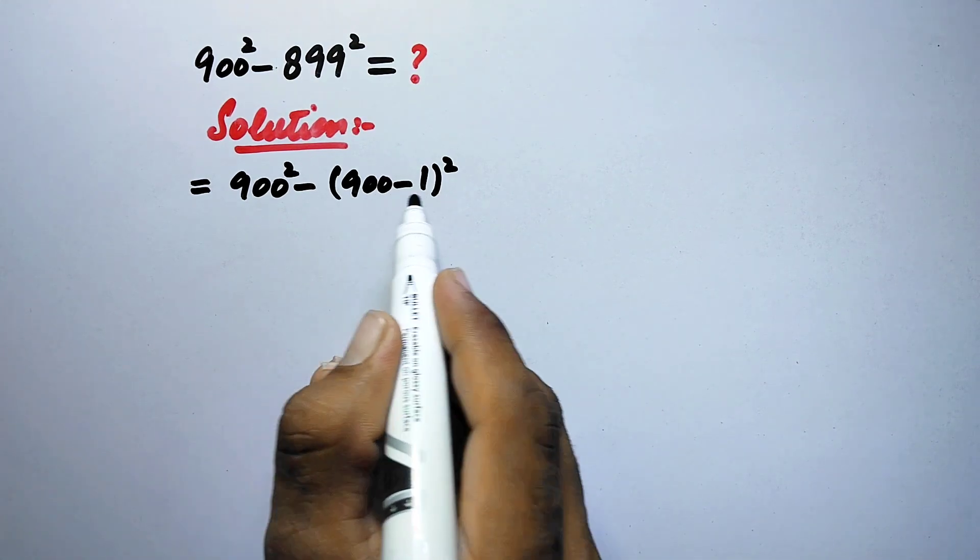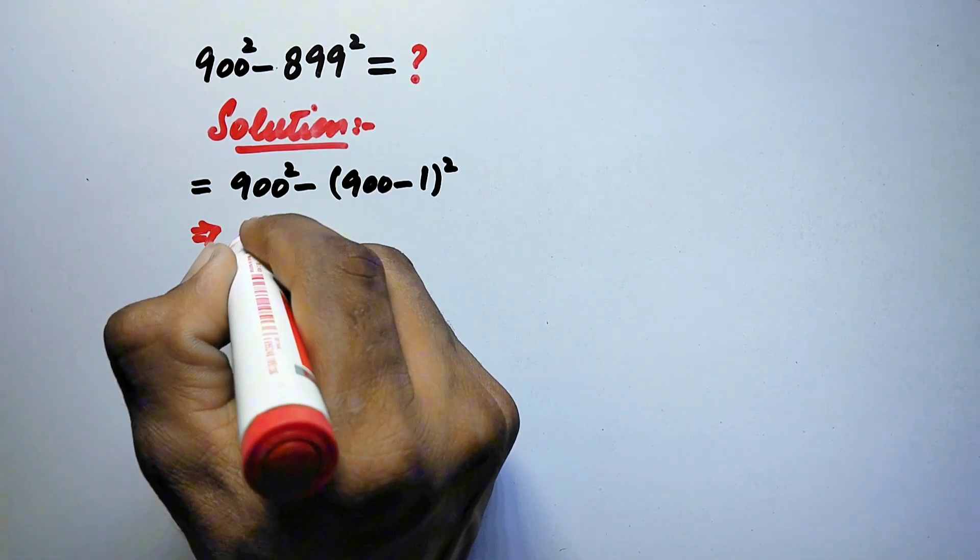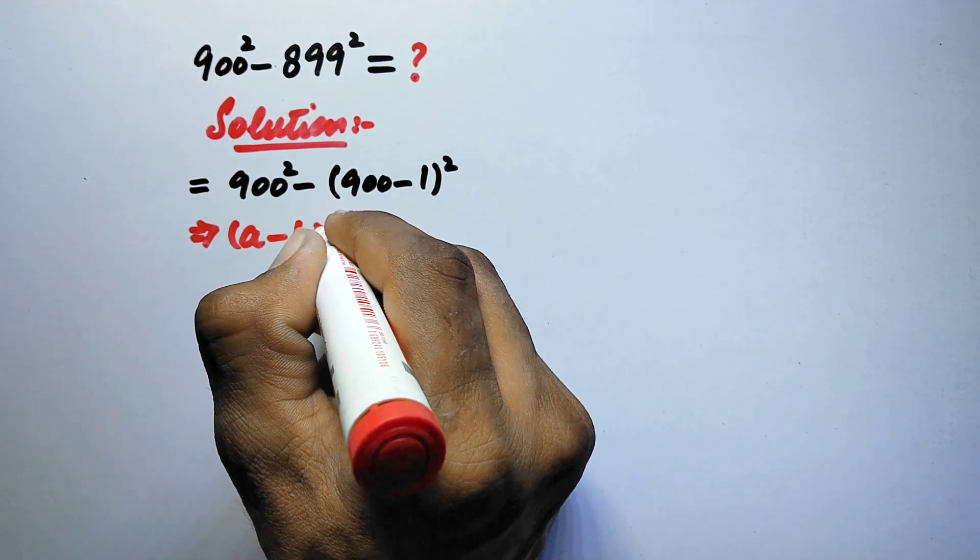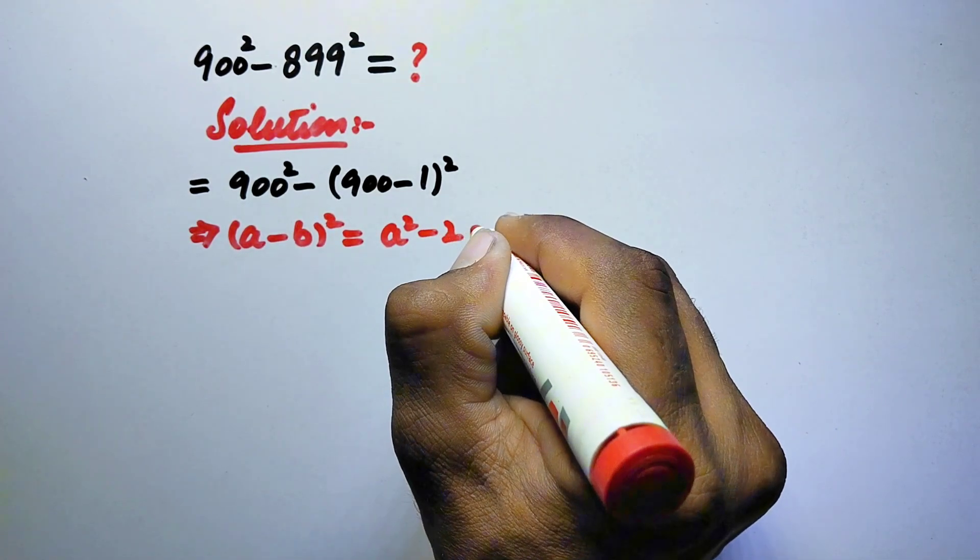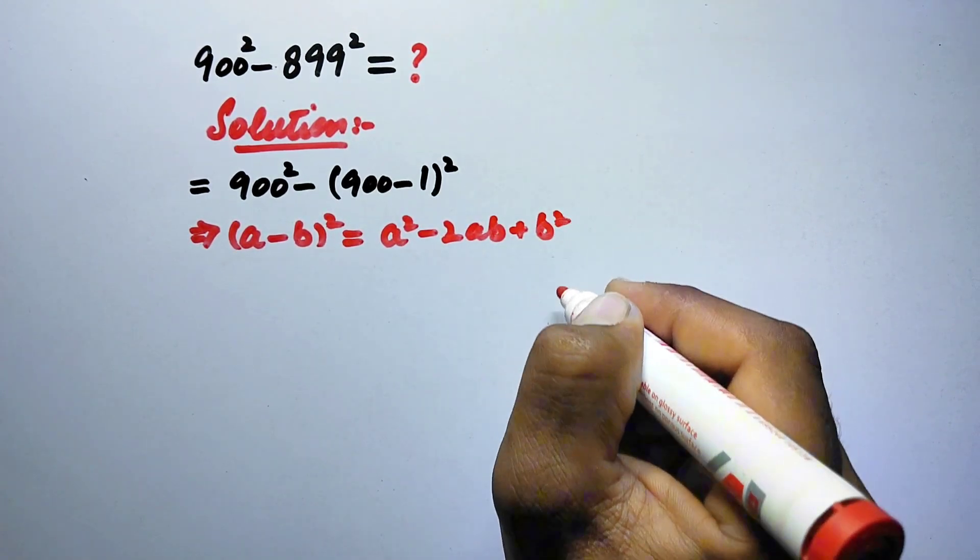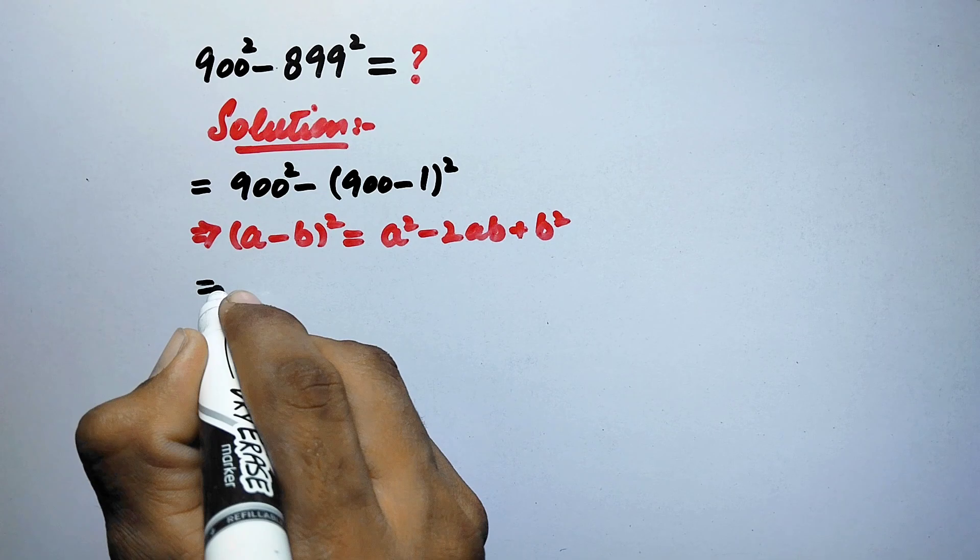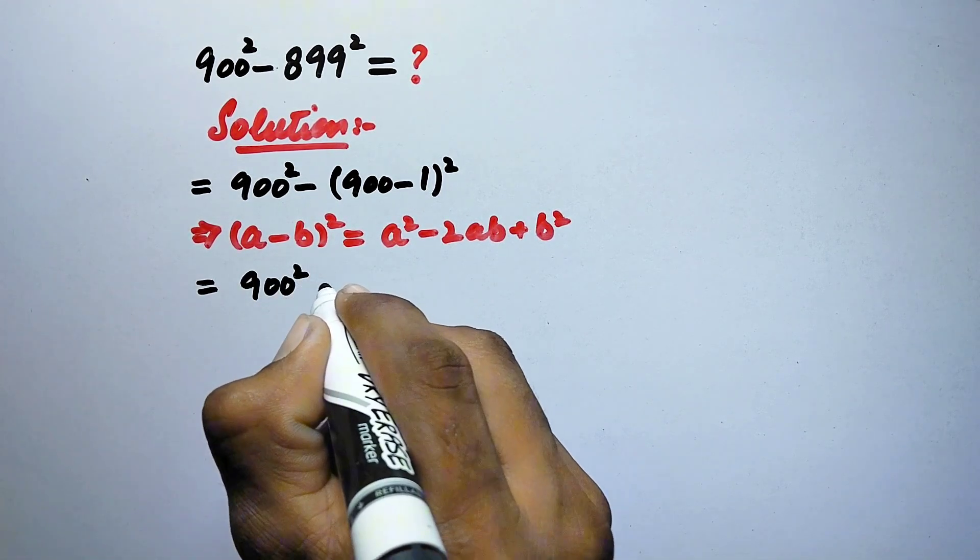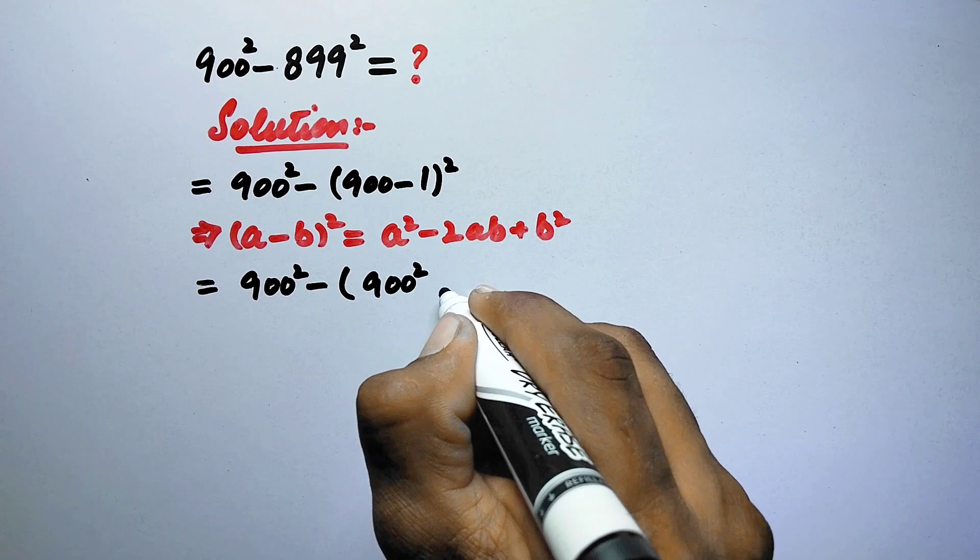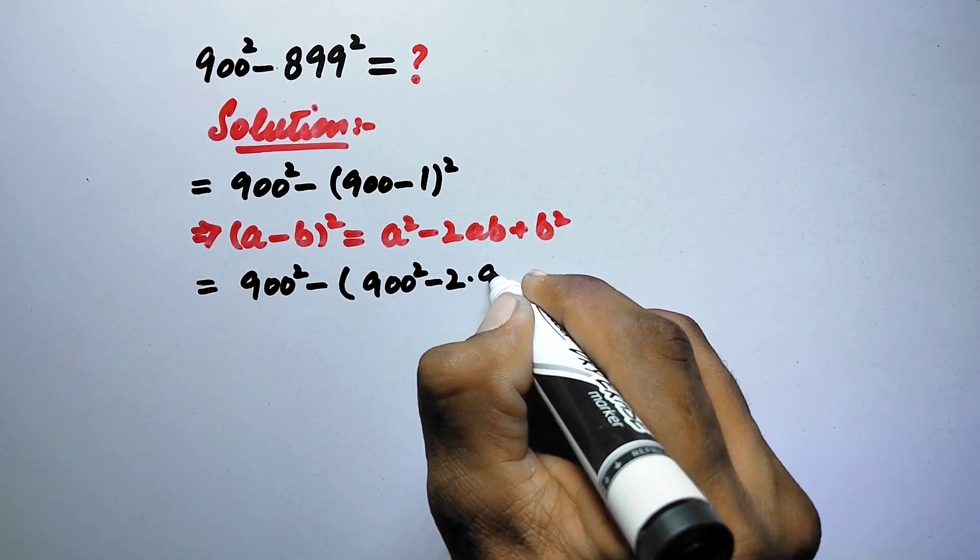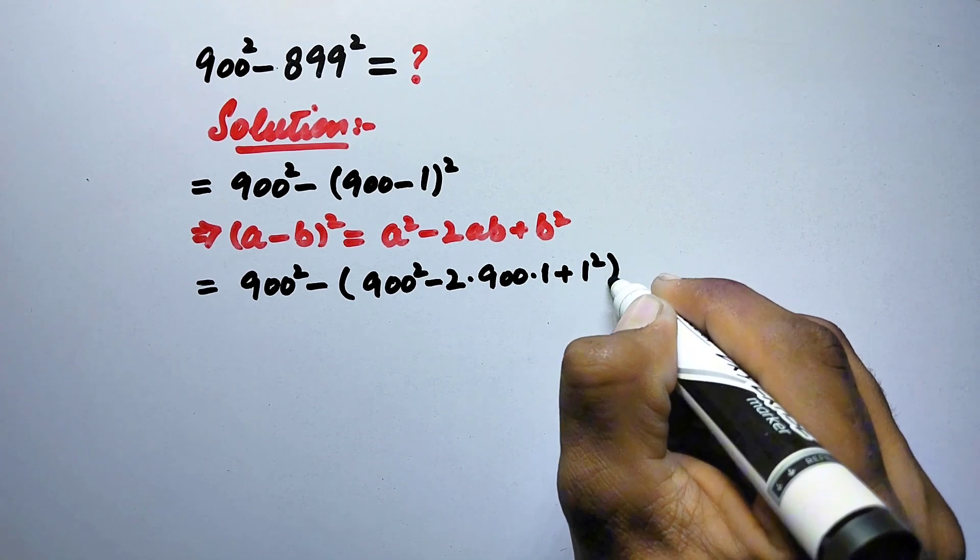So here we can apply an algebraic identity: (a - b)² = a² - 2ab + b². Therefore here it will be equal to 900² minus (900² - 2 × 900 × 1 + 1²).